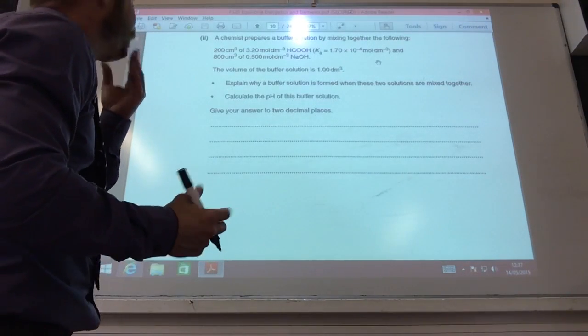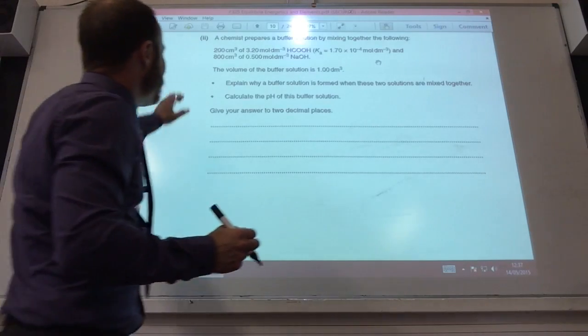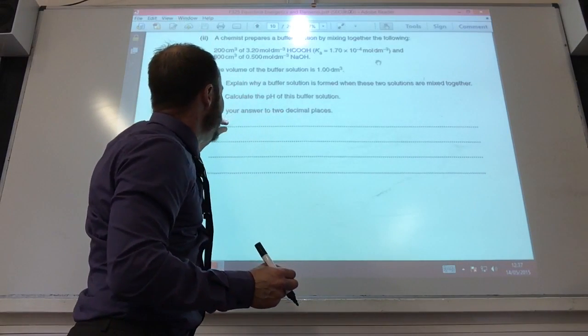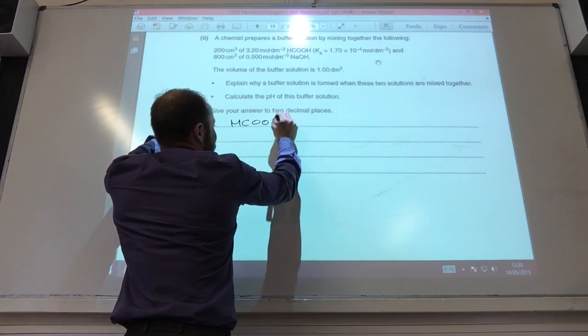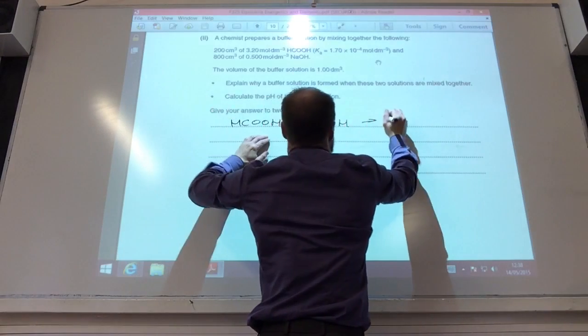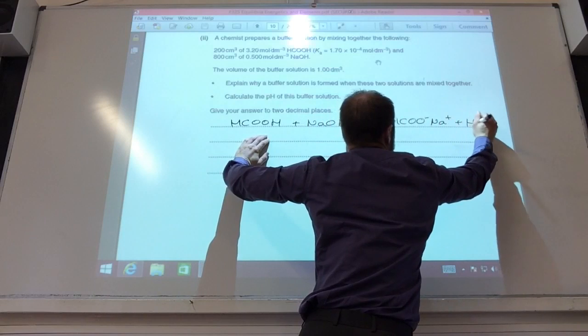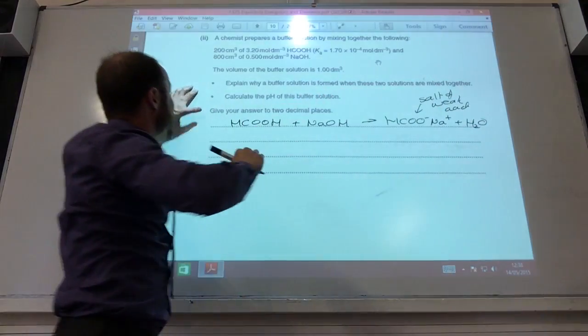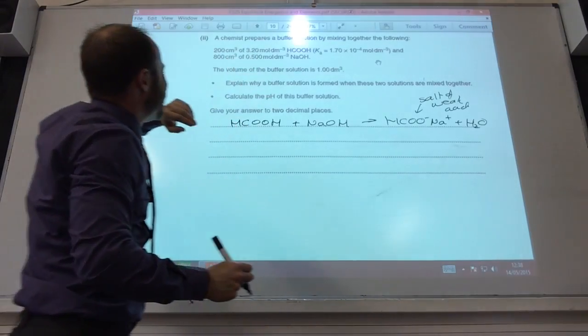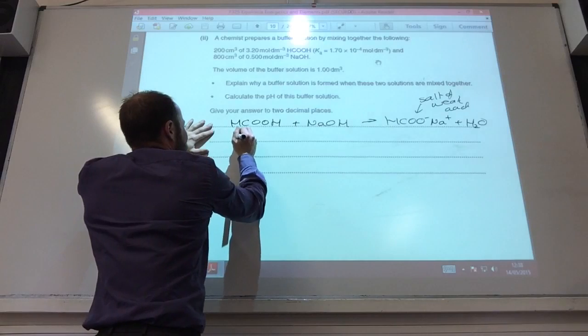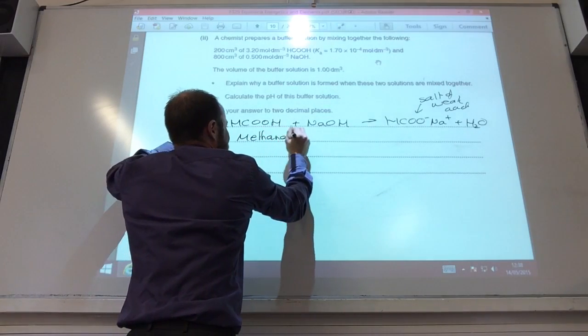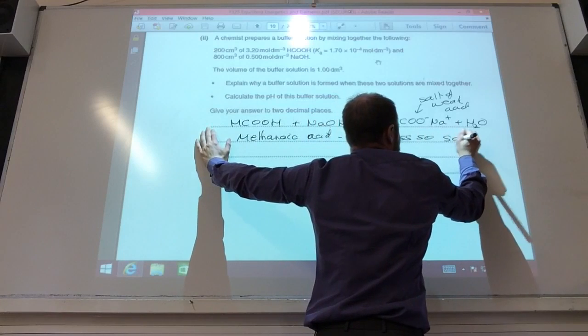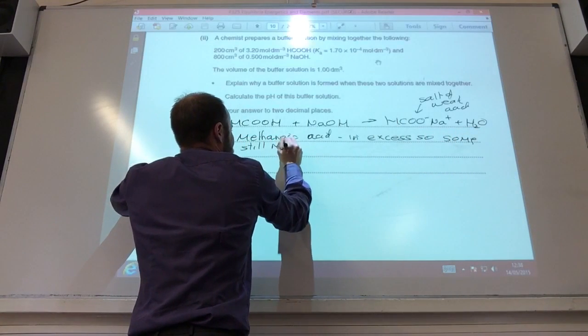So this one's a bit of a tricky one. Chemists prepare a buffer solution by mixing methanoic acid with sodium hydroxide solution. Volume is 1 decimeter cubed, so that makes it nice and easy. First of all, explain why buffer solution is formed. Well, first of all, the methanoic acid is going to react with sodium hydroxide to form sodium methanoate and water. So that there is your salt of your weak acid. But if you notice, which we will come up in a minute, the methanoic acid, you can see from these values, methanoic acid is in excess, so there is still some methanoic acid remaining. So we need to say methanoic acid is in excess, so some still remains after that reaction.